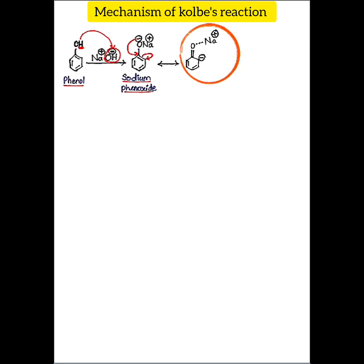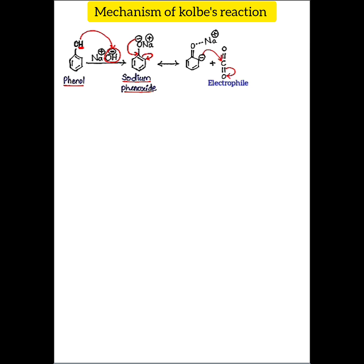This nucleophilic carbon attacks CO₂, which acts as the electrophile — it is a weak electrophile. In the CO₂ molecule, the pi electrons are shifted toward the oxygen atoms due to their higher electronegativity, decreasing electron density on the carbon atom of CO₂, making it electrophilic. The nucleophile attacks this carbon and a sigma bond forms between the ring carbon and the CO₂ carbon.